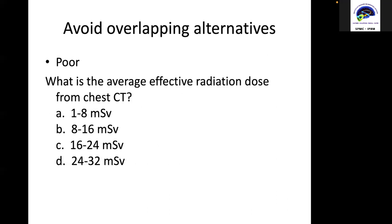Avoid overlapping alternatives. For example: 'What is the average effective radiation dose from chest CT?' with options A: 1 to 8, B: 8 to 16, C: 16 to 24, D: 24 to 32. If you notice, letter A and B both contain 8, so they overlap. This should be avoided.